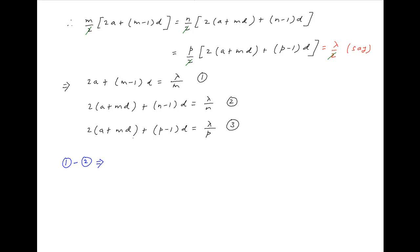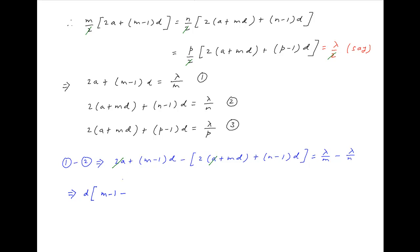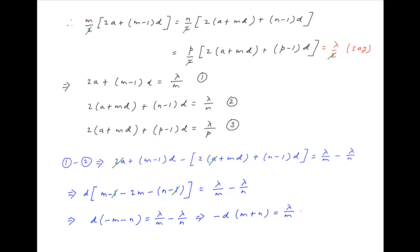Equation 1 minus equation 2 implies: 2a plus m minus 1 times d minus in brackets 2 times a plus md plus n minus 1 times d equals lambda upon m minus lambda upon n. Taking d common, we get d times in brackets m minus 1 minus 2m minus n minus 1 equals lambda upon m minus lambda upon n. The left-hand side simplifies to d times minus m minus n, so minus d times m plus n equals lambda upon m minus lambda upon n. Let's call this equation 4.